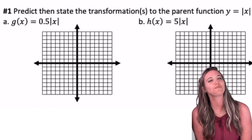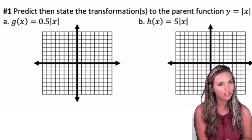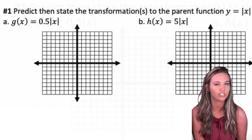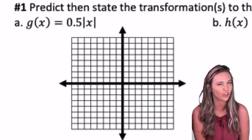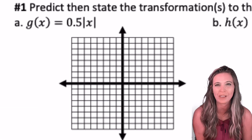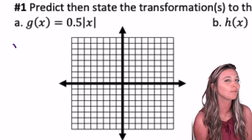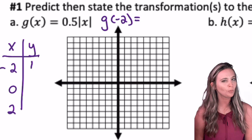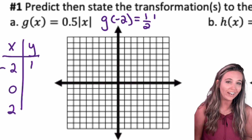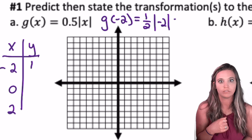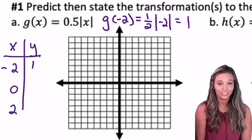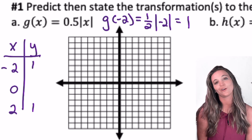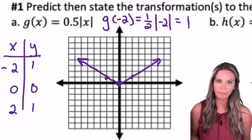Now back to our absolute value function family. Let's call our parent function y equals absolute value of x. What transformation is going to occur when I multiply my parent function by 0.5? Let's make a table of values. G of negative two: 0.5, which is one-half, times the absolute value of negative two — one-half times two is one. G of two is also one. And 0.5 times zero is zero, so g of zero is zero.